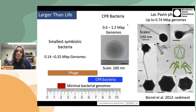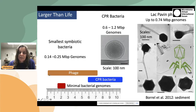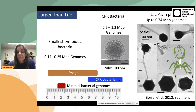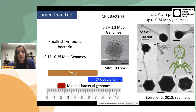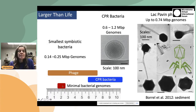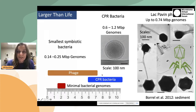Putting this into perspective, here we have a size scale. Here is the range of phage genomes. Here is the range of some small-celled bacteria — the CPR bacteria, such as TM7, Zaccari bacteria, Gracili bacteria, OD1, and Parcubacteria — that are also present in various human microbiomes. Minimal bacterial genomes are even smaller. Some of the smaller symbionts have genomes of the size indicated here. So clearly phages in some cases have genomes that are larger than bacterial genomes.